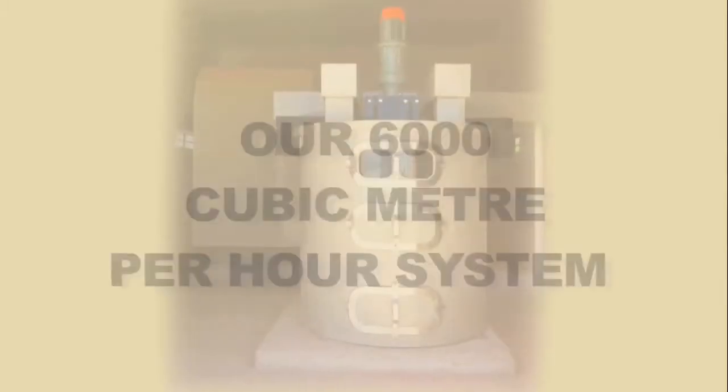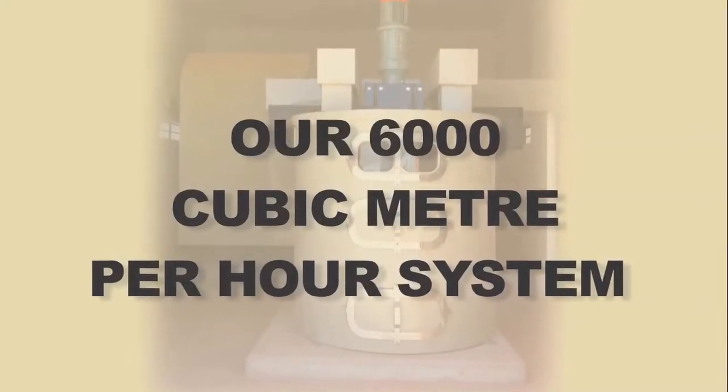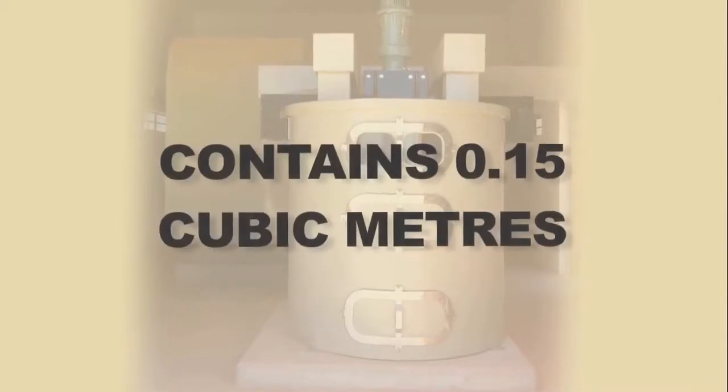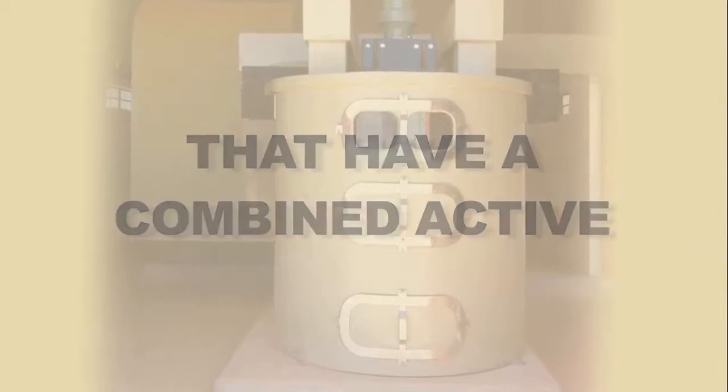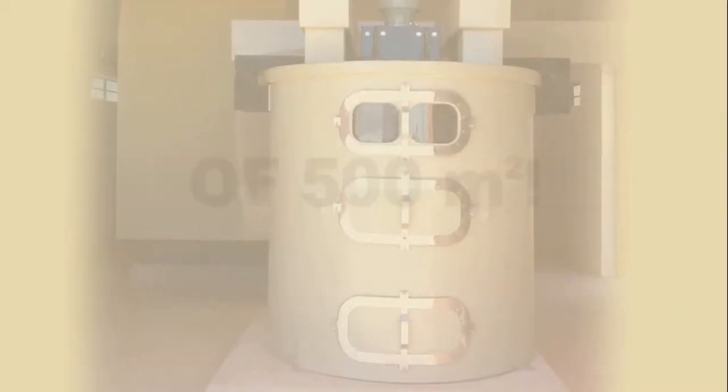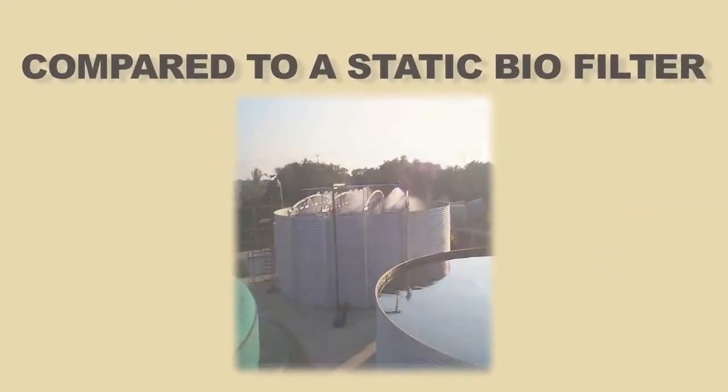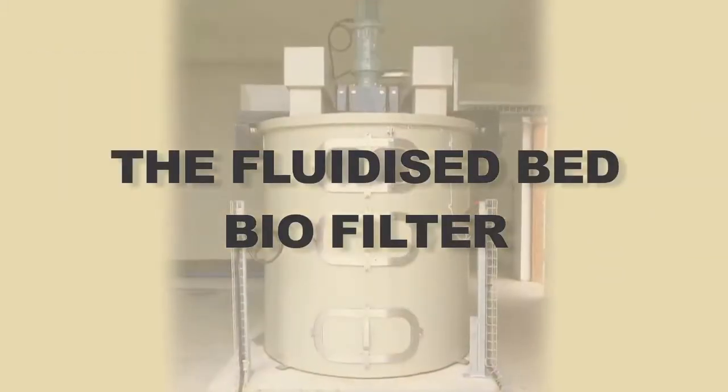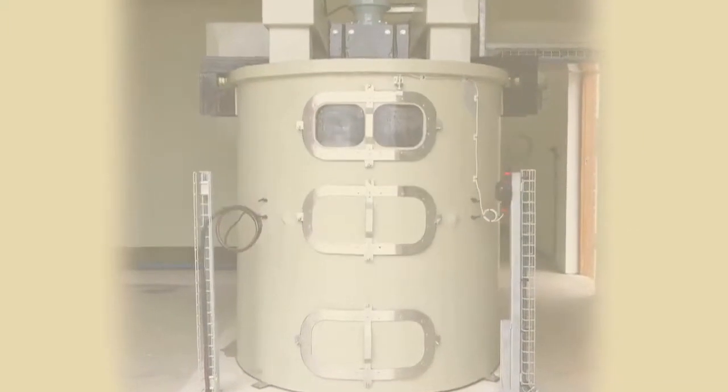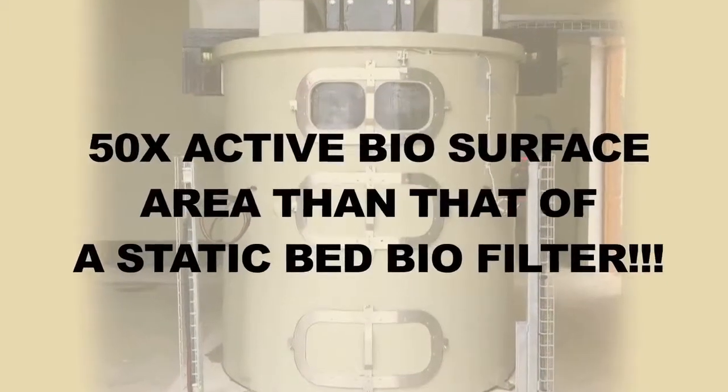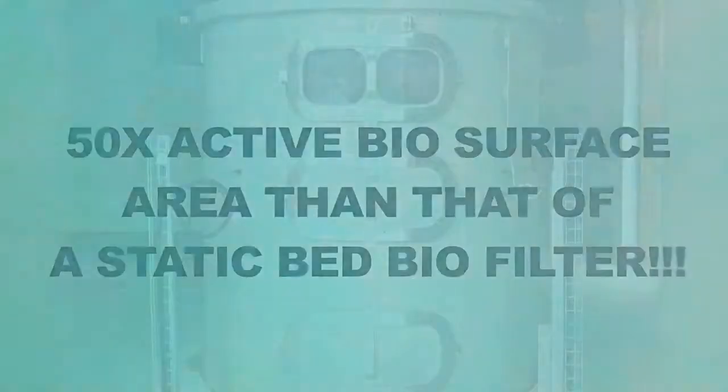So perfect that our 6,000 cubic meter per hour system contains 0.15 cubic meters of media pellets that have a combined active biosurface area of 500 square meters. Compared to a static biofilter, the fluidized bed biofilter has 50 times the active biosurface area per square meter than that of a static biofilter.